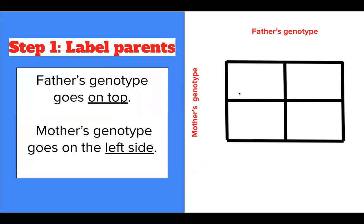Step one, we always have to label the parents. In a Punnett square, it's typical to see the father's genotype written on top of the square and the mother's genotype written to the left.